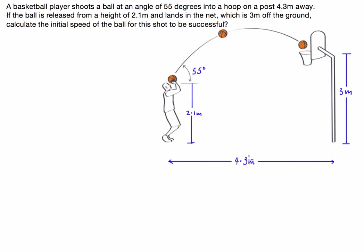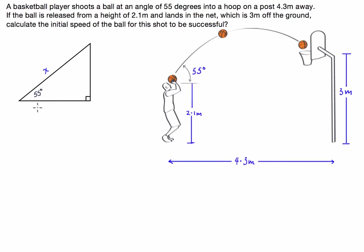Whenever I do a projectile motion question like this, the first thing I do is draw myself a velocity triangle, such as this one here. We've got our launch velocity which I'm going to label x, and it's going to be broken up into two components: the vertical component and the horizontal component. We can use trigonometry to calculate them as a fraction of the launch velocity. For the horizontal, because it's the adjacent side, this is equal to x times the cosine of 55 degrees. And the vertical, because it's the opposite side to our launch angle, this is x times the sine of 55 degrees.